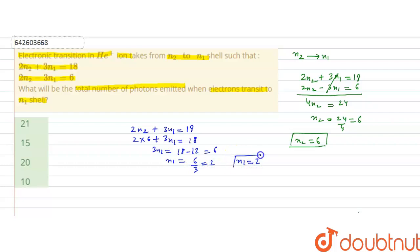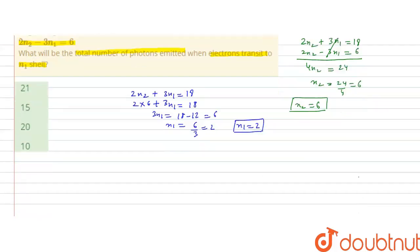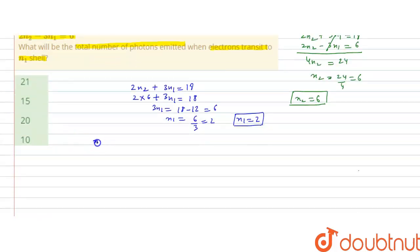We have N1 is equal to 2. It means electronic transition has taken place from N2 that is 6 to N1 that is 2. The electronic transition has taken place from here. Now we have to calculate the number of photons emitted.